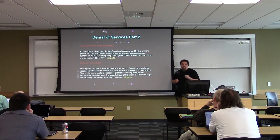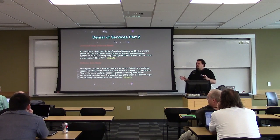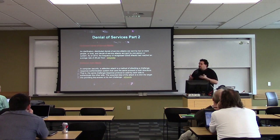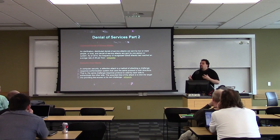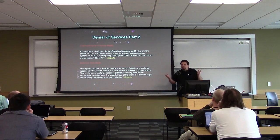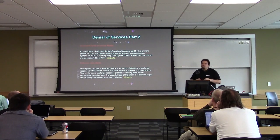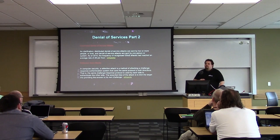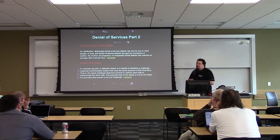A distributed denial of service is when someone has a whole botnet — an army of computers — sending requests at you. That can be very difficult to protect against. Their goal is often just to flood your network connection. If you have a 10 meg pipe and 100 megs of data coming in, it grinds to a halt. You need a lot of bandwidth and load balancing. People spend a lot of money protecting against DDoS attacks.